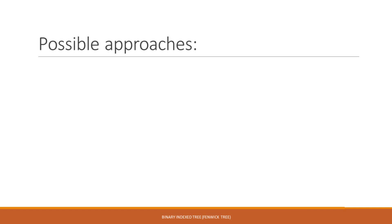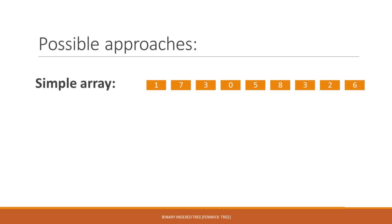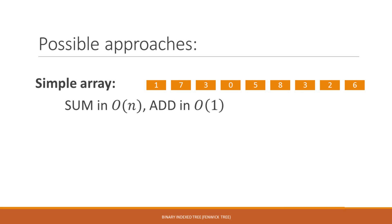What are possible approaches to this problem? If we have a lot of add operations we want to perform, then the obvious answer is to use an array. We can simply store each number in the array. If we want to add a value, we simply update the element. And if we want to compute a prefix sum, we iterate over all the numbers in the prefix. Now the sum is really slow though — in the worst case we iterate over all elements, so it's O(n). But the add is really fast, O(1).